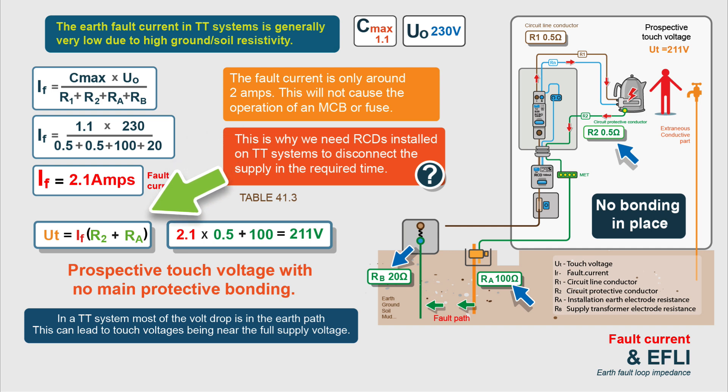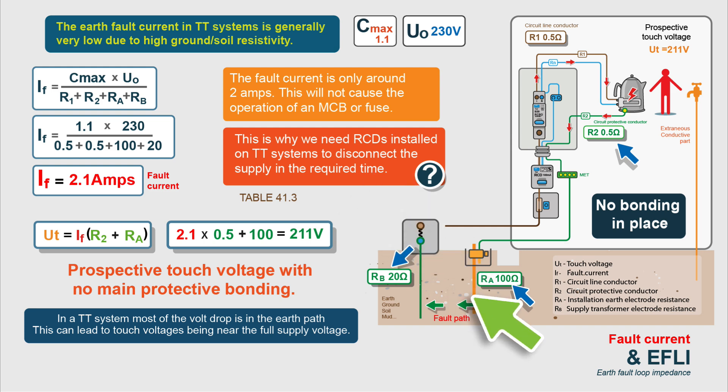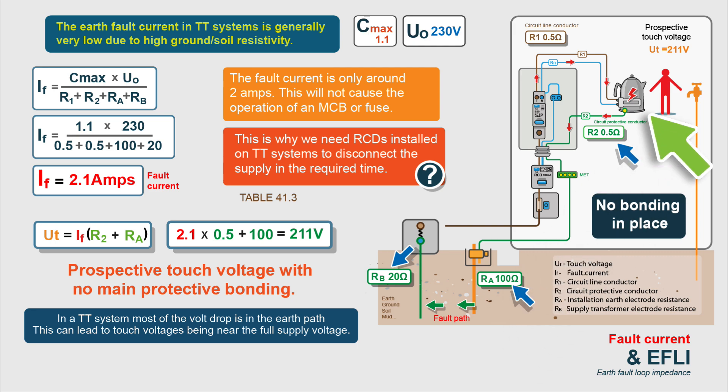So now we can calculate our touch voltage — and this is the touch voltage with no bonding in place. Touch voltage is the voltage that can appear on exposed or extraneous conductive parts during a fault. The formula is: UT equals fault current times (R2 plus RA). Doing the maths: 2.1 times (0.5 plus 100) equals 211 volts. That is a very high touch voltage. The reason for this high touch voltage is that most of the volt drop is in the earth return path, giving us a very high touch voltage at the fault.